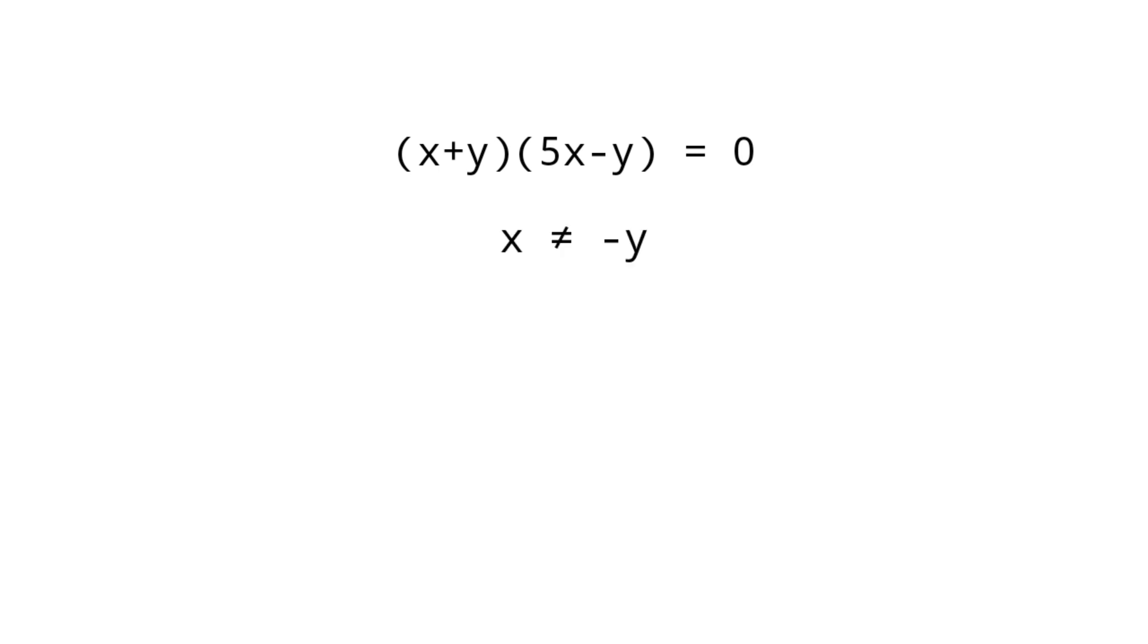X not equal to minus Y because length cannot be negative. So 5X minus Y equals 0, or Y equals 5X. So ratio between radius of bigger circle and smaller circle equals 5.